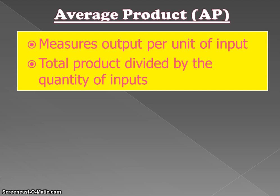Our final calculation and term to know is average product, which measures output per unit of input. You calculate it as total product divided by the quantity of input. For example, with our Subway data, when two workers were working the total output was 50 sandwiches, so 50 divided by 2 equals 25 — that's the average product, or the average amount each worker contributed. When three workers were working, total output was 90, so 90 divided by 3 is 30 per worker. Average product doesn't help us decide how many workers to hire — we use marginal analysis for that — but it's another important calculation to know.